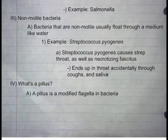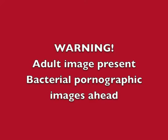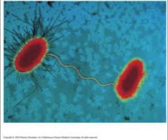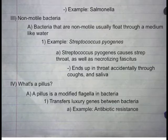What is a pilus? A pilus is a modified flagella in bacteria. A pilus looks like a flagella; however, it is used to transport specific DNA between microbial cells, transferring luxury genes between bacteria. Example: antibiotic resistance.